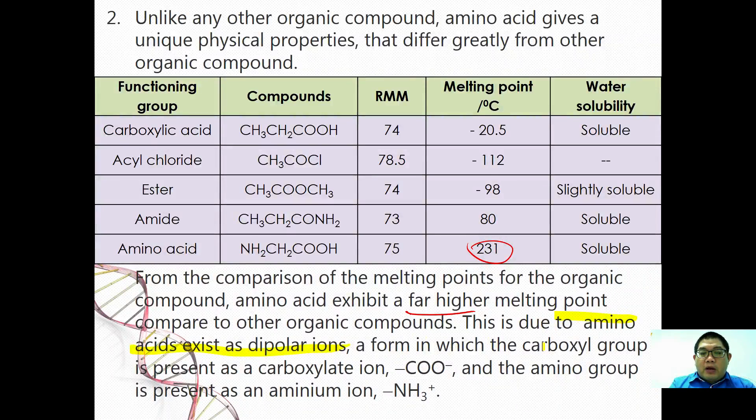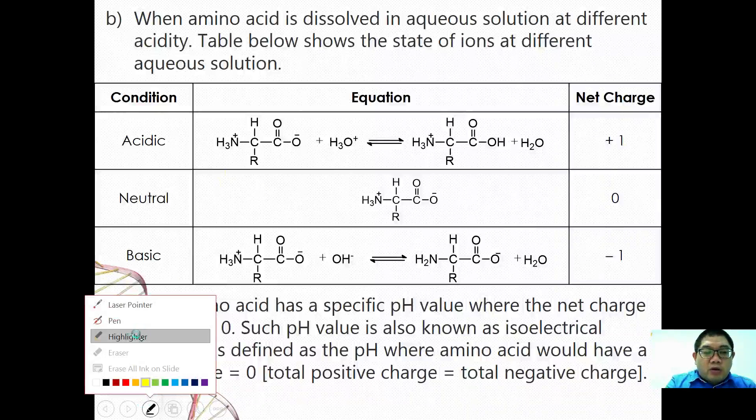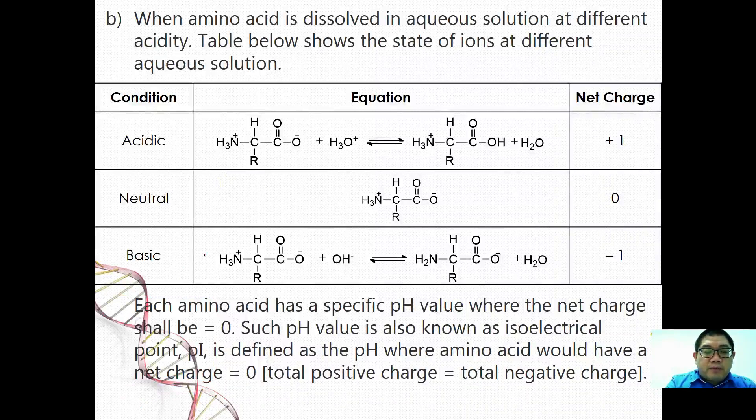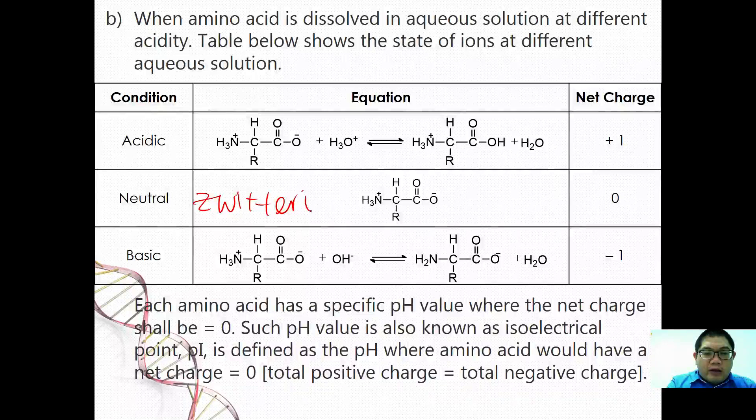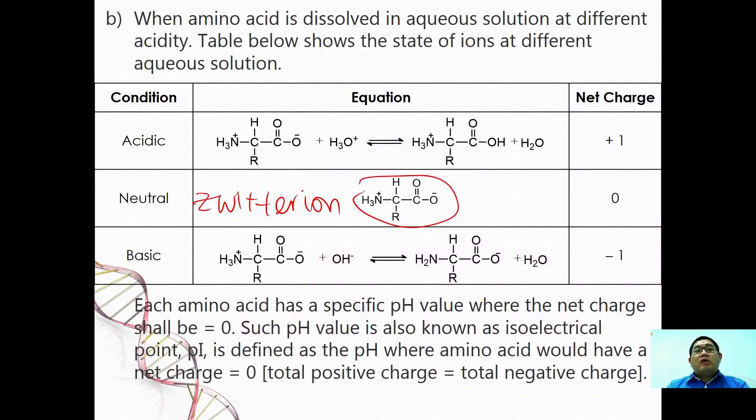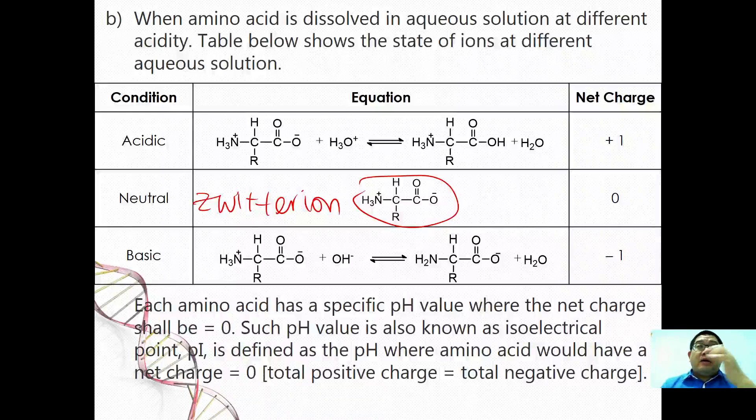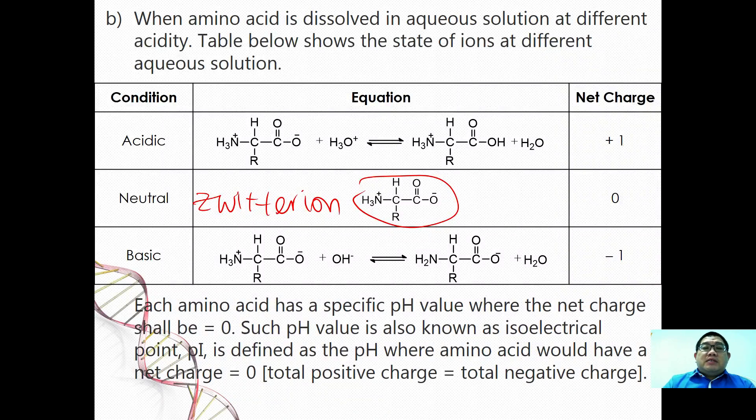For these ions here we call it as what we call as zwitterion. The presence of the zwitterion allows the molecules to be held by strong ionic bonds, making their melting point to be exceptionally high.